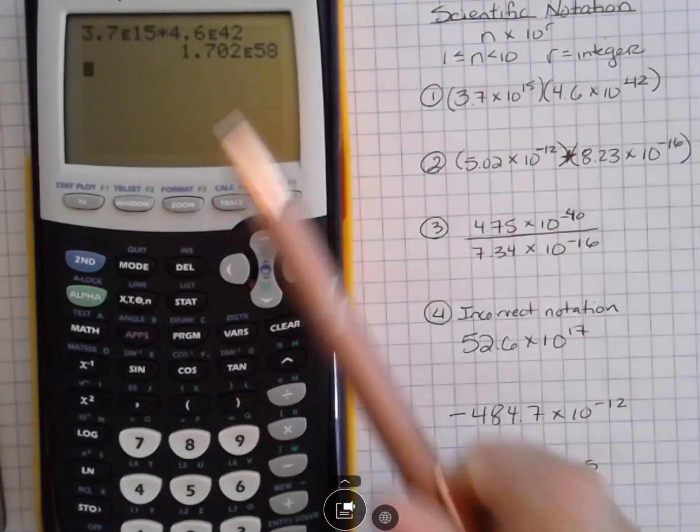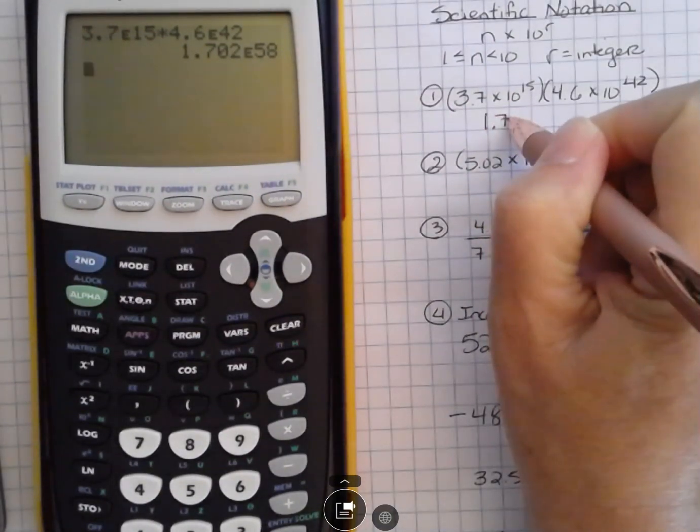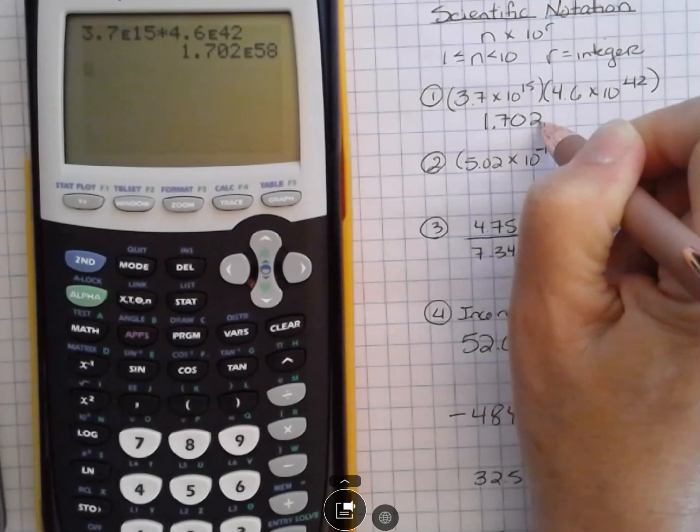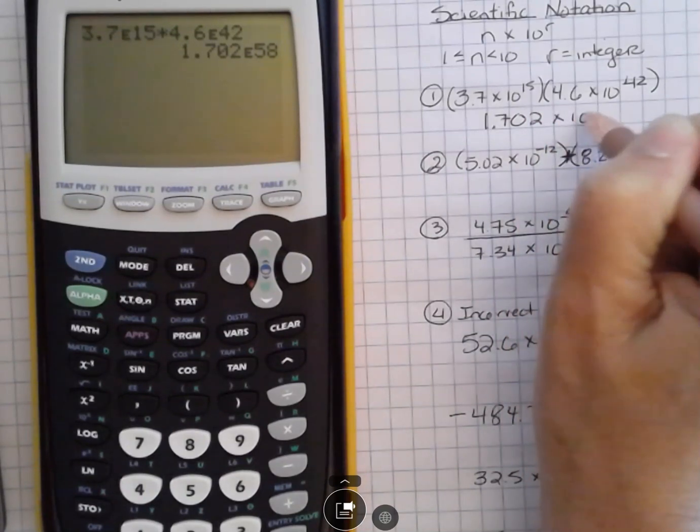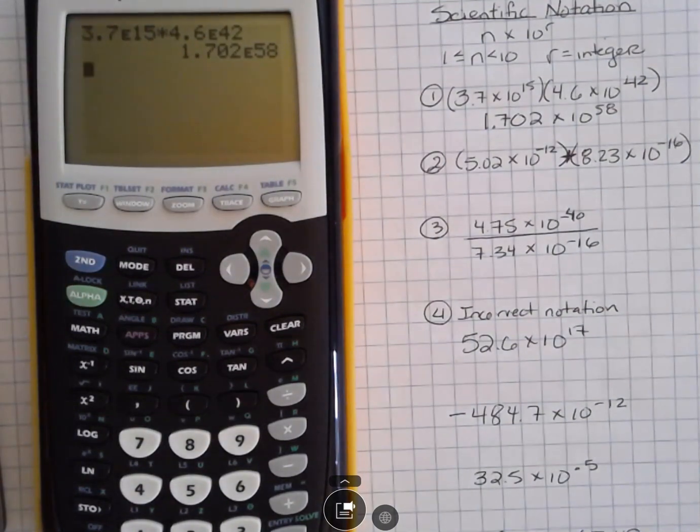And that's going to give me this answer. So understand that this answer, if you wanted to write it out in actual scientific notation, you would say 1.702 times 10 to the 58th power. So we want to make sure we can transfer between what we see on the calculator and what's on our paper, or what should be on our paper.